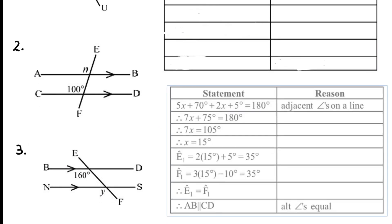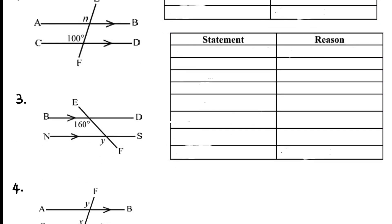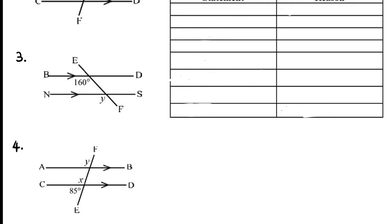For the third example, we have parallel lines BD and NS with transversal EF. Using the F-shape, y and 160° are corresponding angles, so y is equal to 160 degrees. The reason: corresponding angles equal because line BD is parallel to NS.